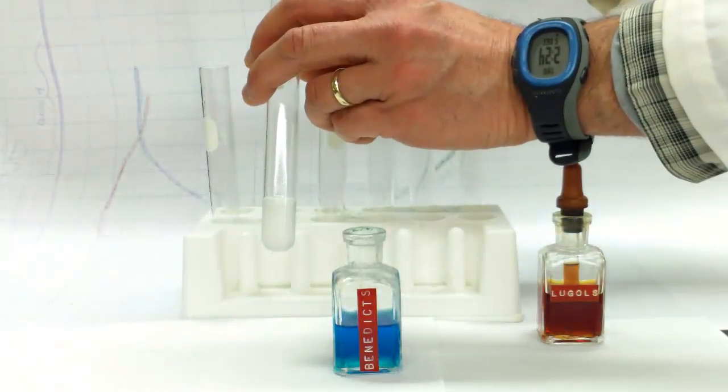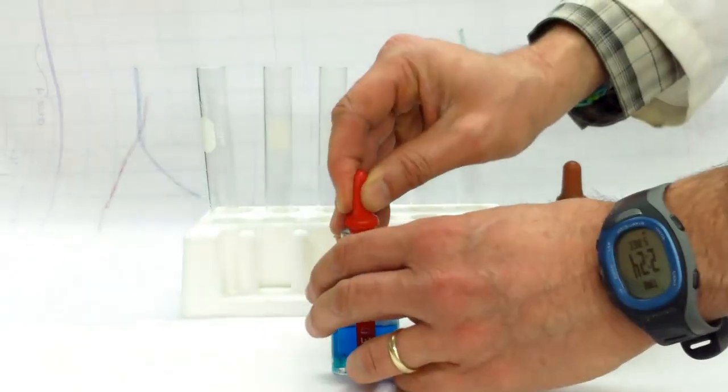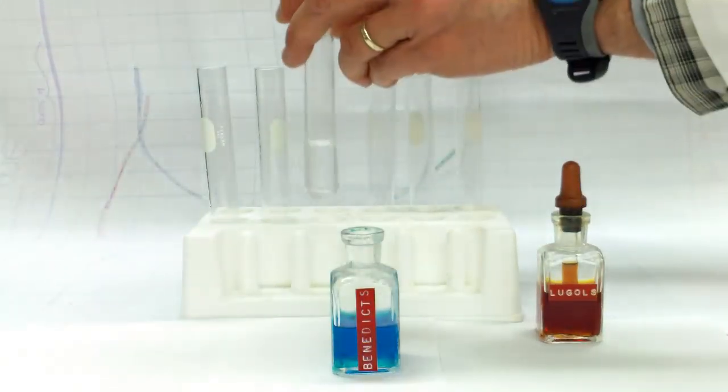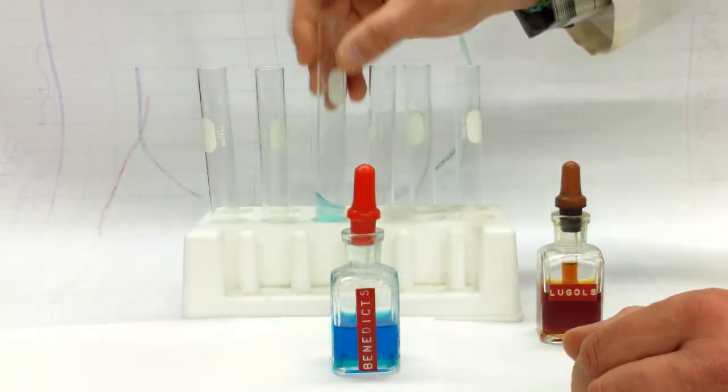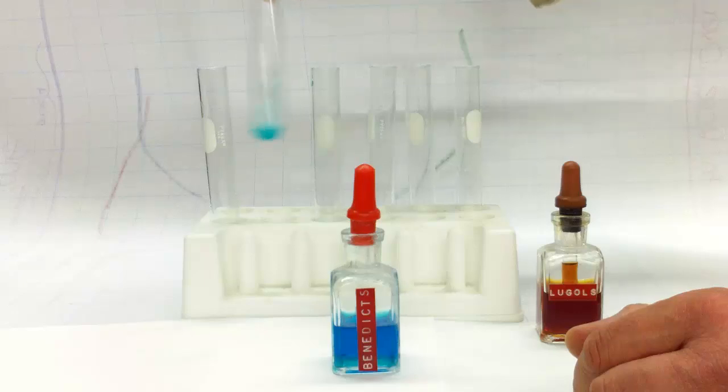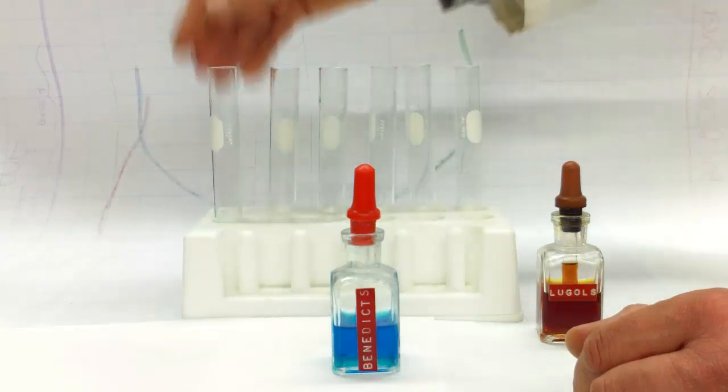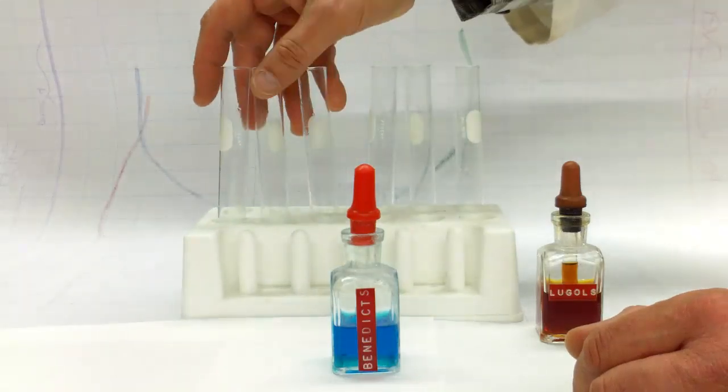1, 2, 10, and the last one, glucose solution, 1, 2, 10. So notice, this indicator does not just react at room temperature. All of these have a bluish color and need to be heated in order to see if there is a reaction.